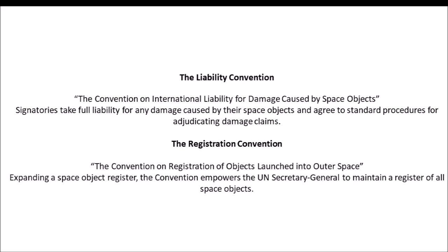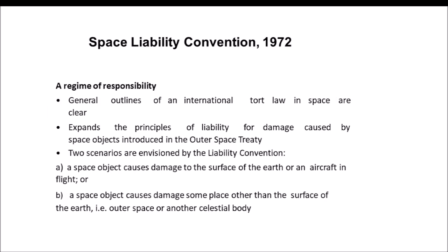The United States is not a signatory to the Moon Agreement. The Liability Convention — the Convention on International Liability for Damage Caused by Space Objects — requires its signatories to take full liability for any damage caused by space objects and agree to a standard procedure for adjudicating damage claims. The Registration Convention requires every space object to be registered, and empowers the UN Secretary-General to maintain a register of all space objects.